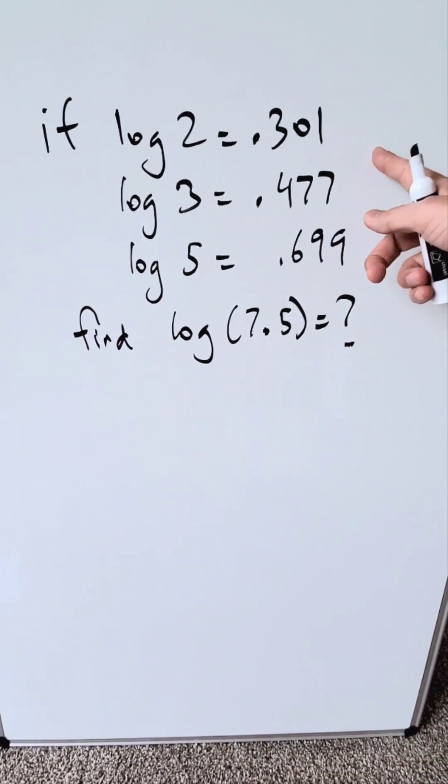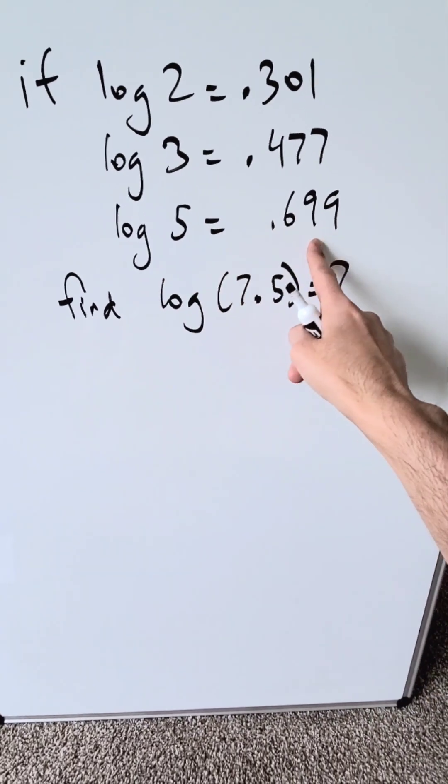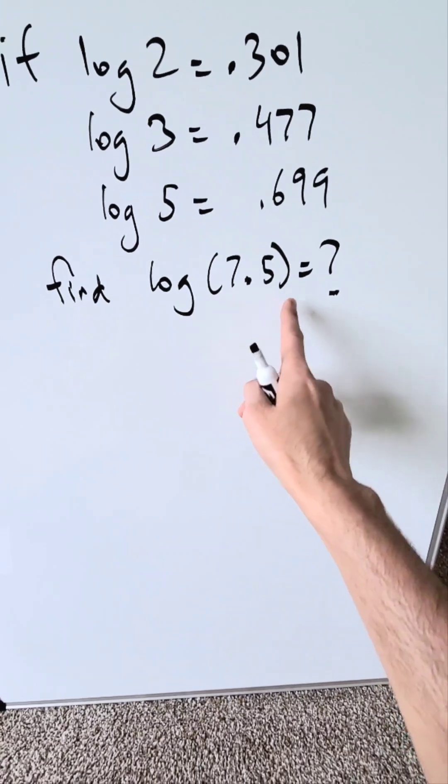If log 2 equals 0.301, log 3 equals 0.477, log 5 equals 0.699, we have to find log 7.5.